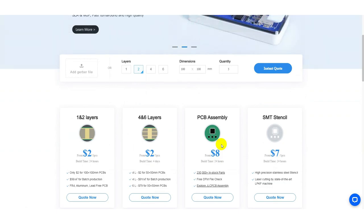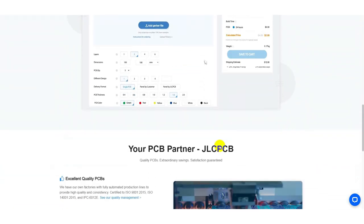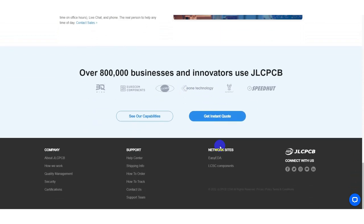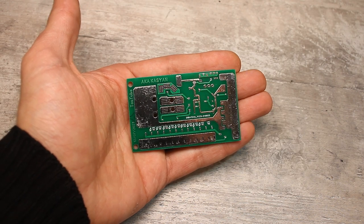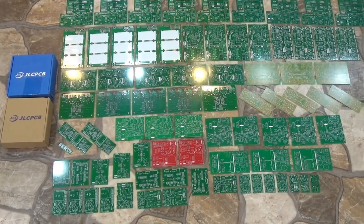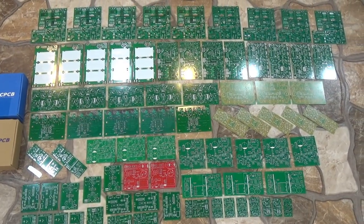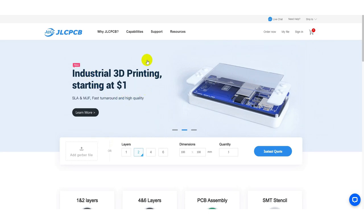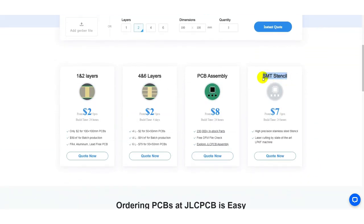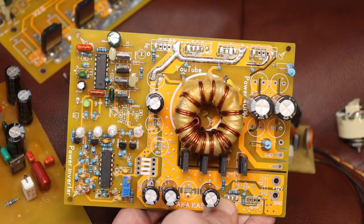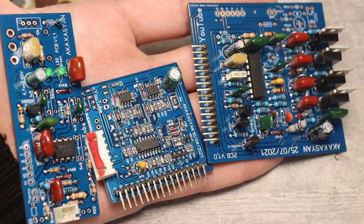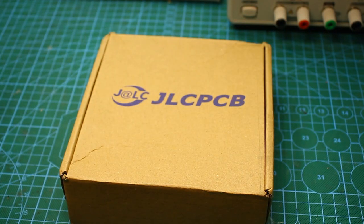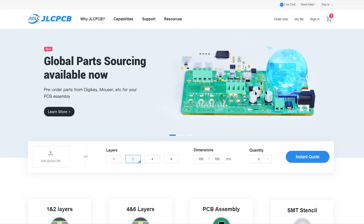But if PCBs are still needed, then welcome to the JLCPCB website. It is one of the largest PCB manufacturers with huge production capacity. The company will produce any boards for you, regardless of the size, shape, and number of layers. You have a large selection of board thicknesses, solder mask colors, and track coatings. Services for industrial 3D printing, the creation of SMD stencils, and even the assembly of circuit boards are also available, and all this is offered at reasonable prices with quality at the highest level. You will find a link to the JLC website in the description.